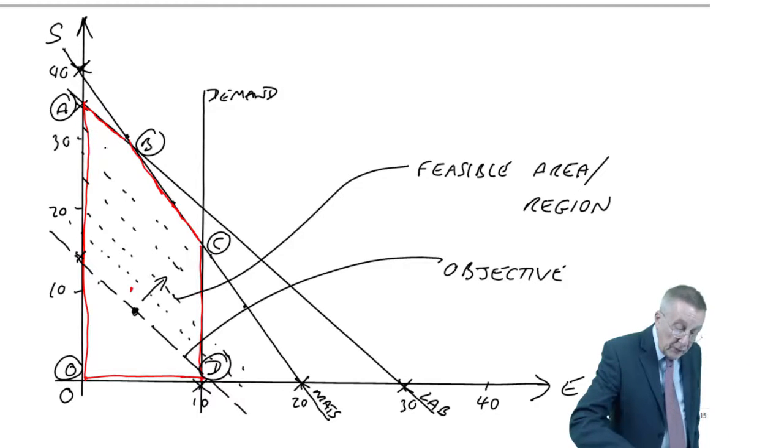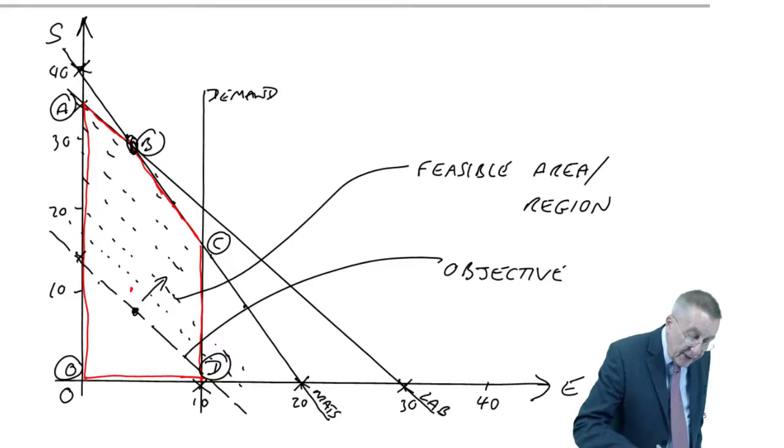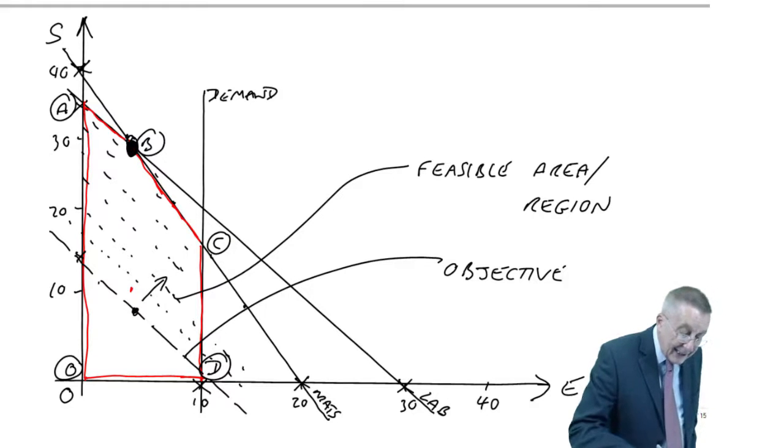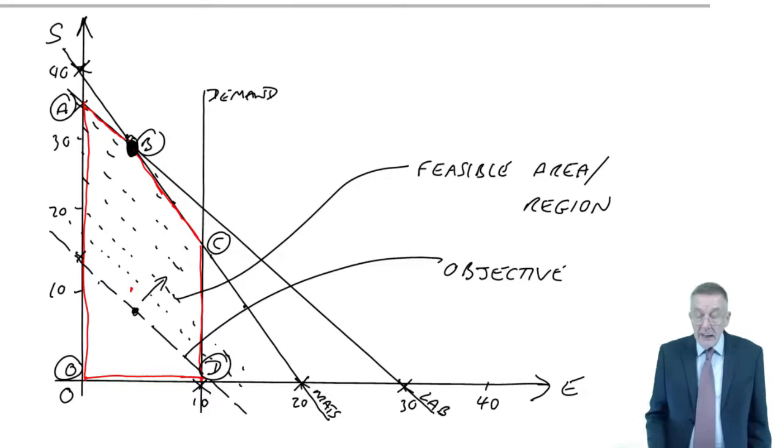And if you carry on moving it out, keeping it parallel, the furthest point away, without leaving the area, is point B.